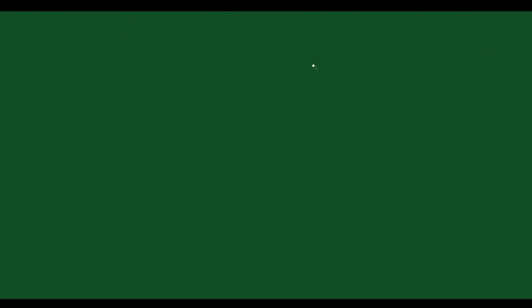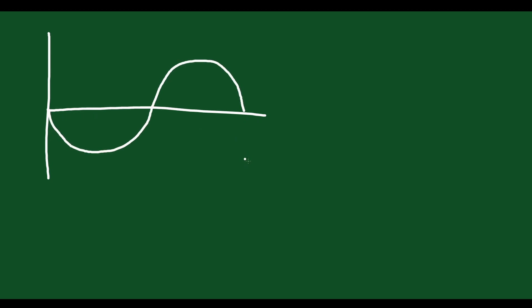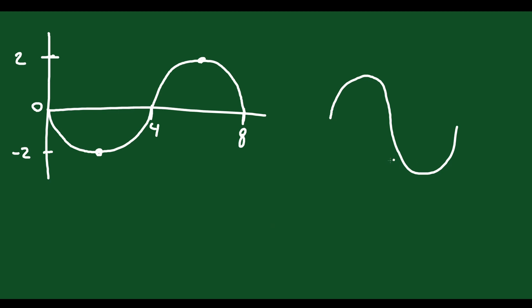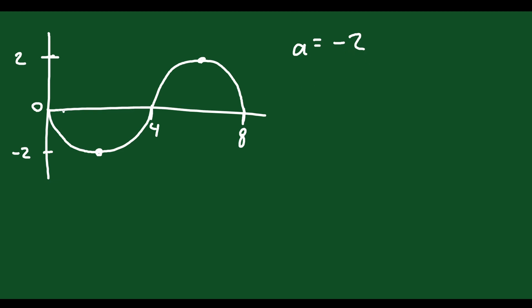Let's do another example where the graph comes down, then up, then down. We have a maximum height of 2 and a minimum height of negative 2. So the midline is at 0 and the amplitude is 2. We're also told that this point is at 8 and this one is at 4. This looks like a sine function because sine starts in the middle, and this also starts in the middle except it goes down — so we could say this is a negative sine, with amplitude negative 2.